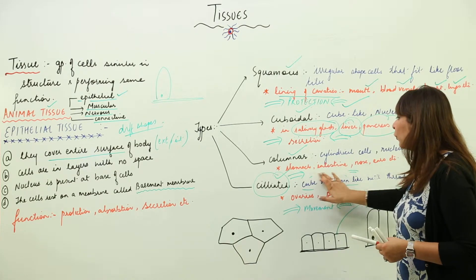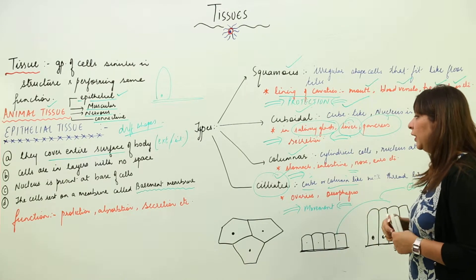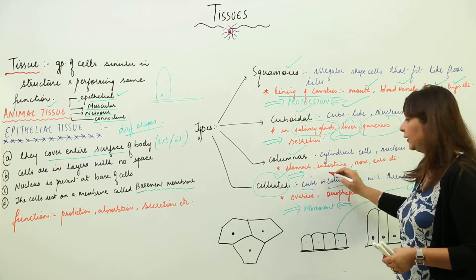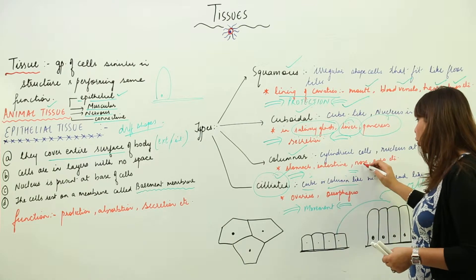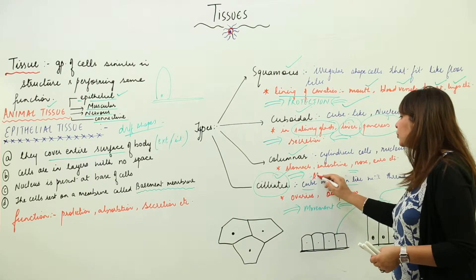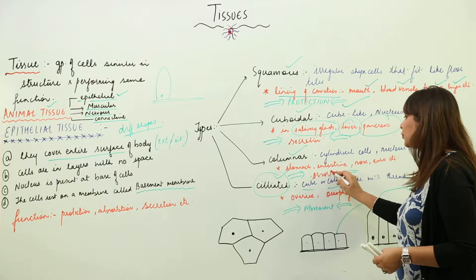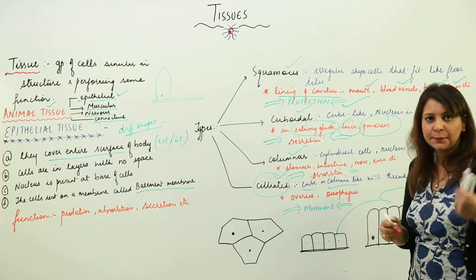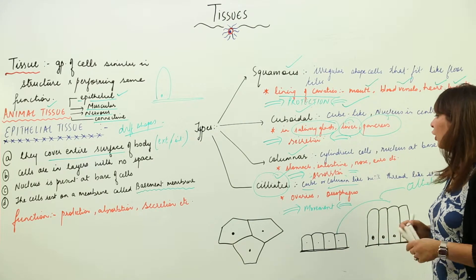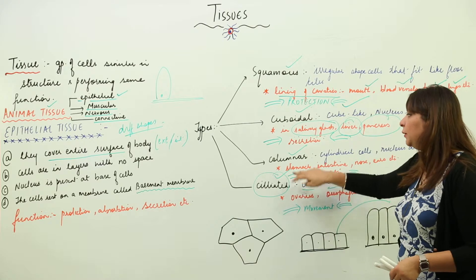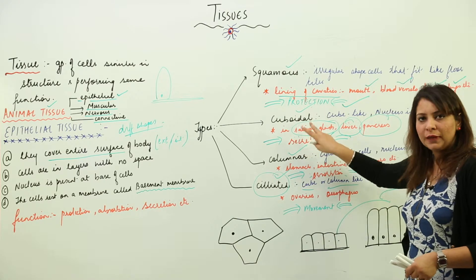Columnar epithelium cells are column-shaped. They are present in the stomach, intestine, nose, and ears. Their function is absorption.